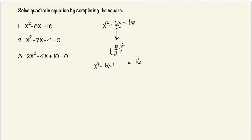First, what we're going to do is add this — 6 over 2, squared — on both sides. Now this is a perfect square, and we can rewrite this as x and bring down the sign that is next to the coefficient of x, which is negative, and bring down the 6 over 2.